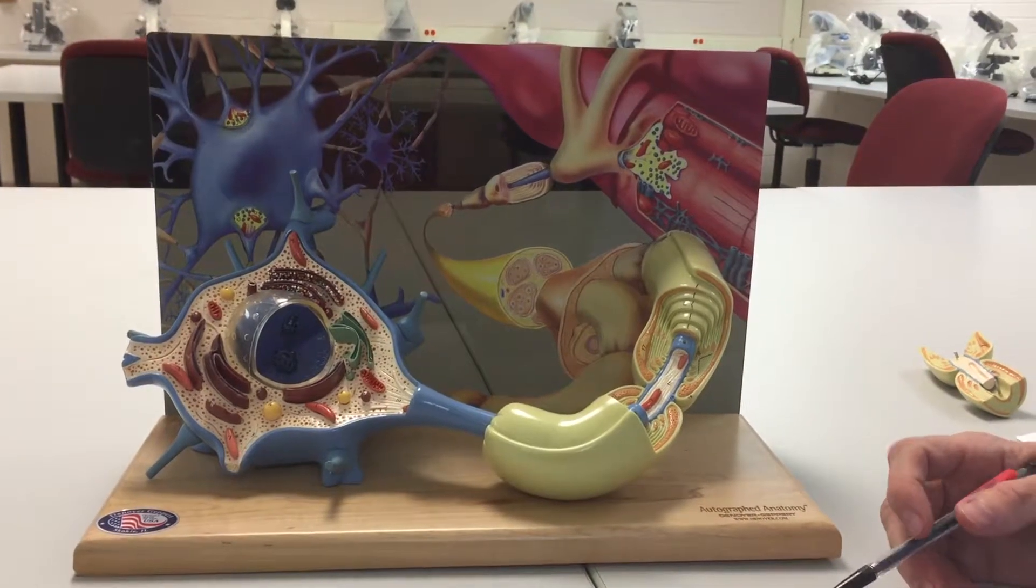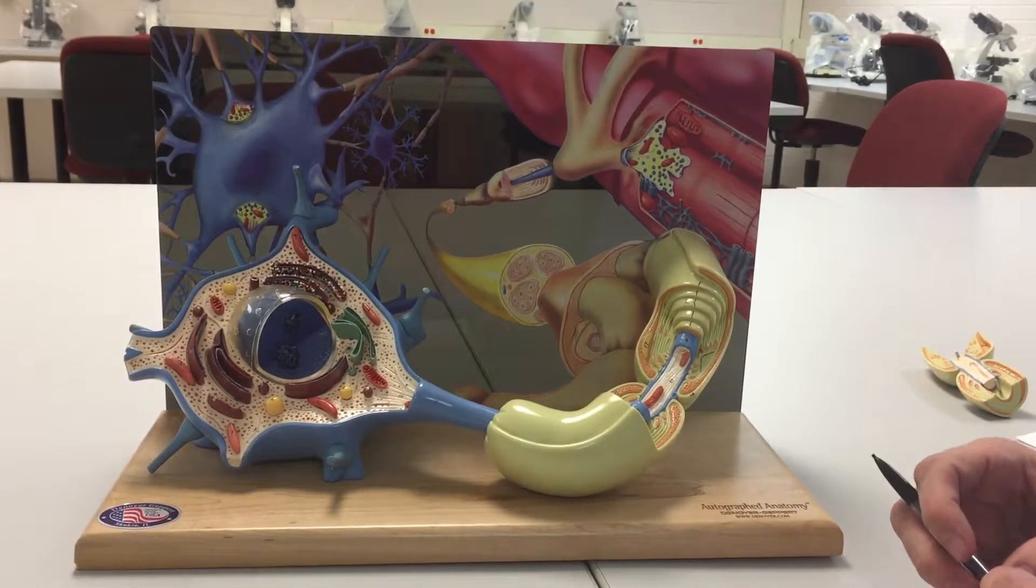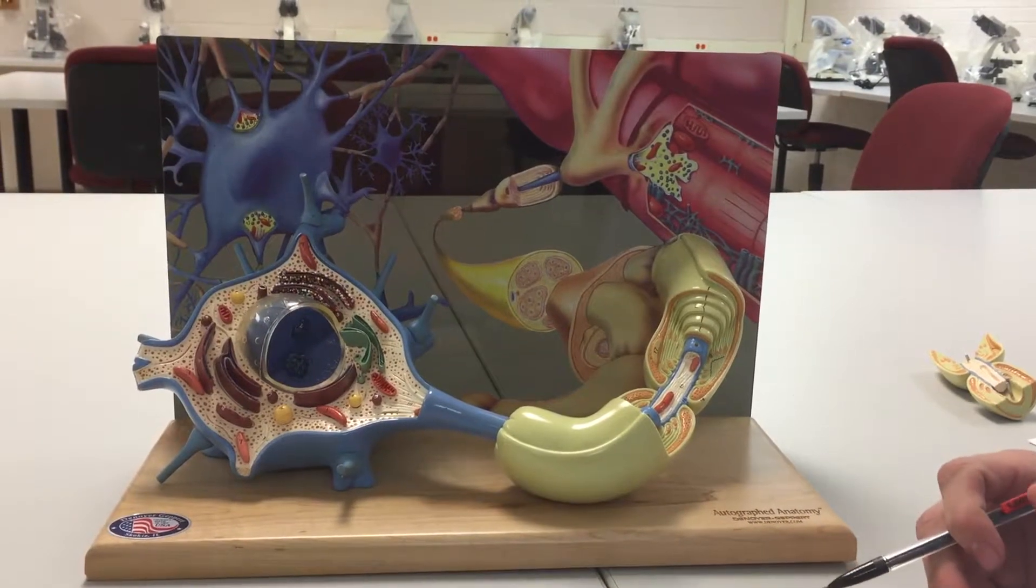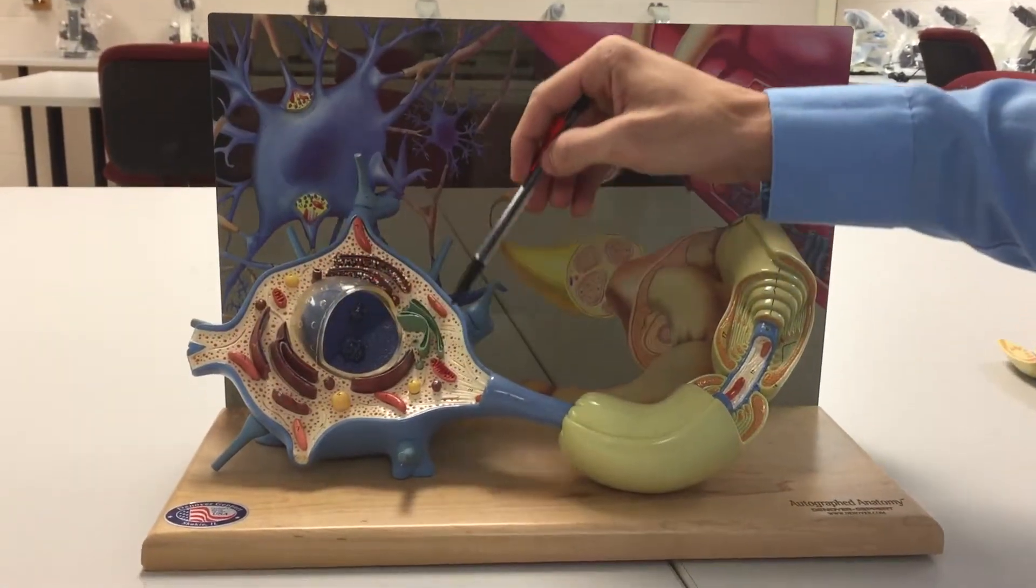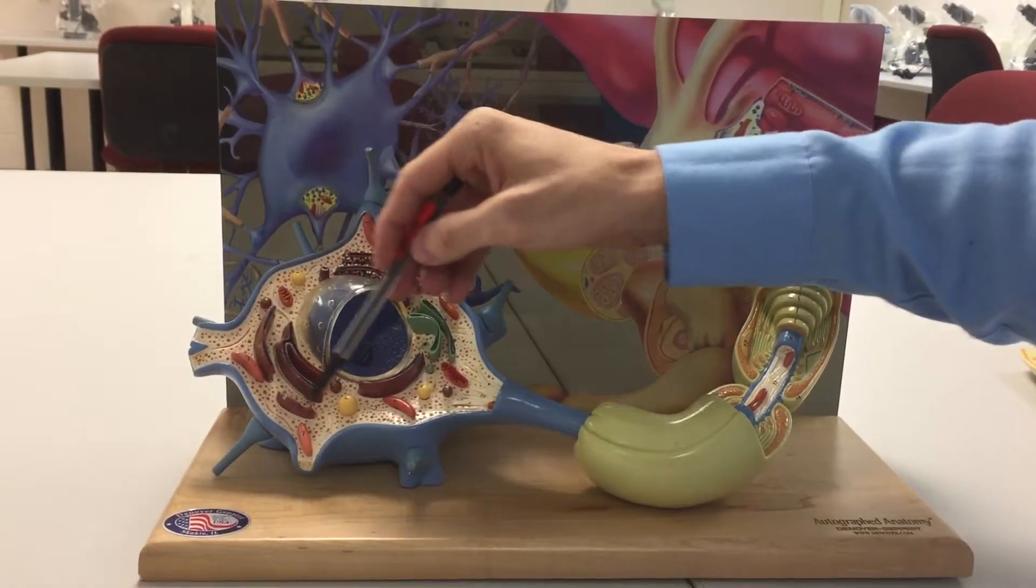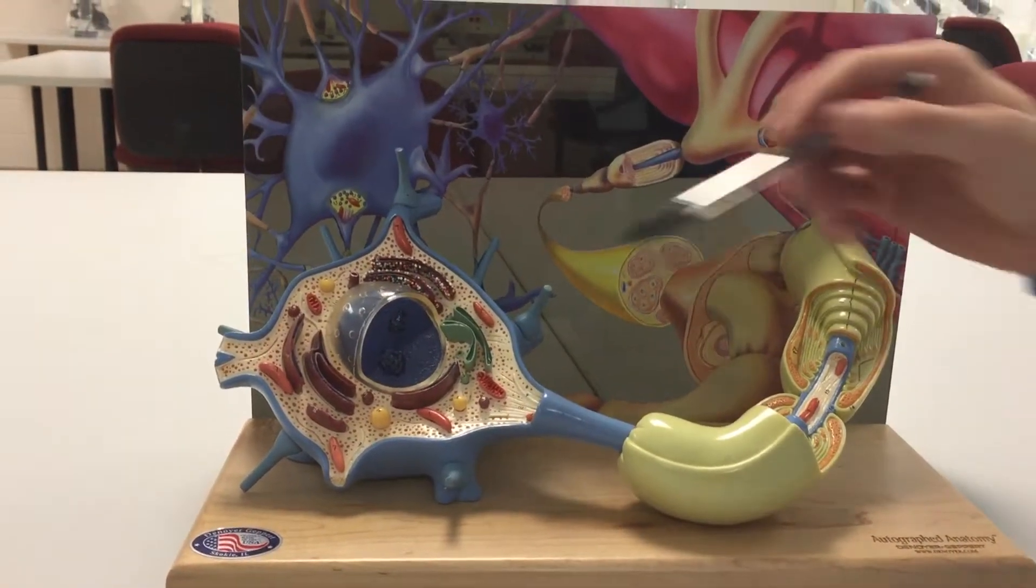Hello again, this is Dr. Blackman and we're going to go over the neuron model for Anatomy and Physiology Lab. This entire structure here is called the cell body and the cell body has a few things that you're responsible for.